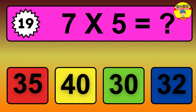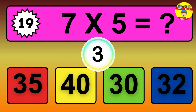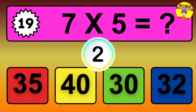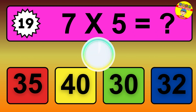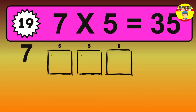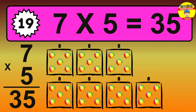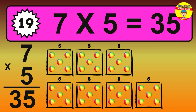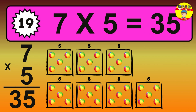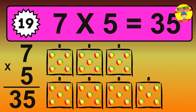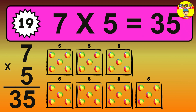Question 19. 7 times 5 equals what? The answer is 7 times 5 is 35. To calculate, we have 7 groups with 5 balls each. So how many balls do we have? 35 balls.